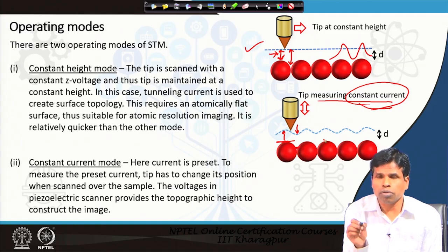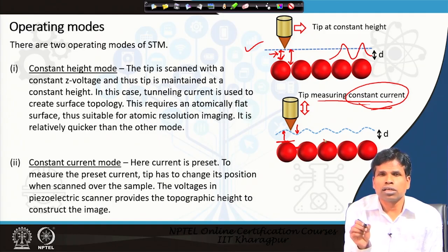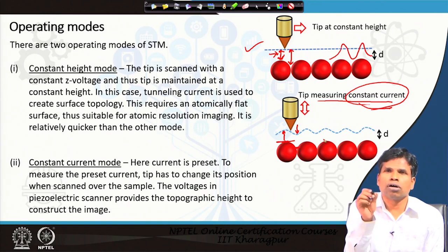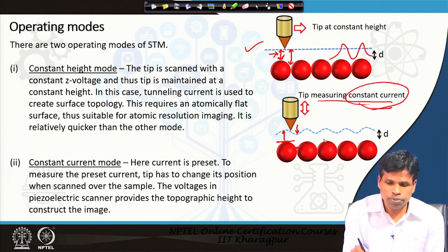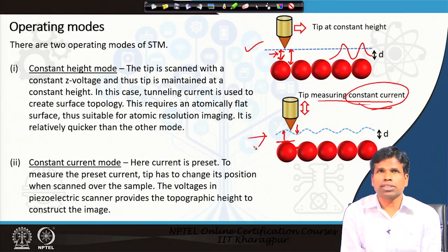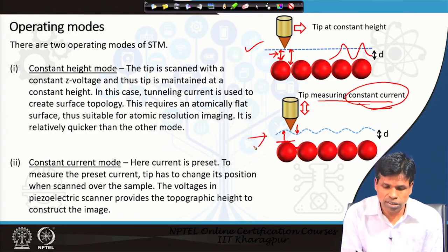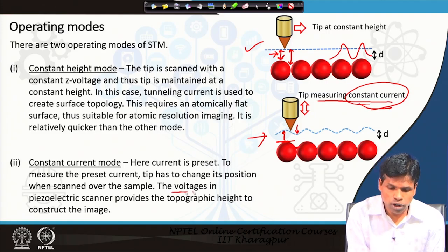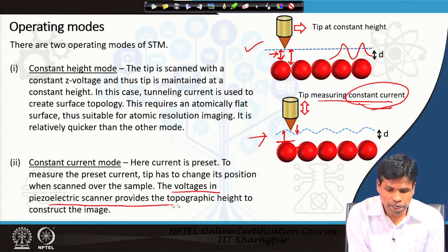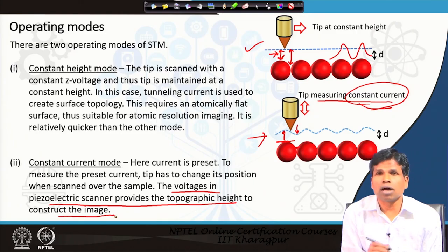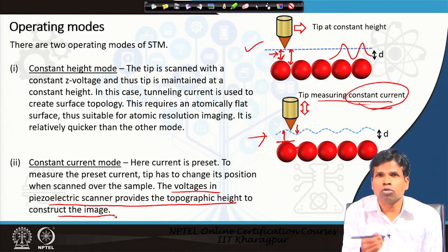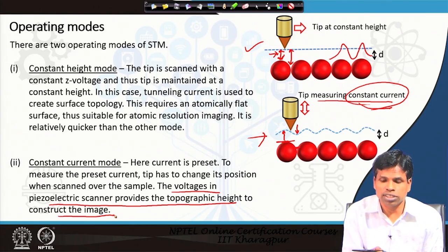The feedback loop gives the signal that you are already reaching the value of the current, so now you have to go upward. In this way, constant current measurements are particularly done with unknown samples. The voltage applied to the piezoelectric scanner provides the topographic height to construct the image — how much voltage we provide to move the tip upward or downward is utilized to construct the image.